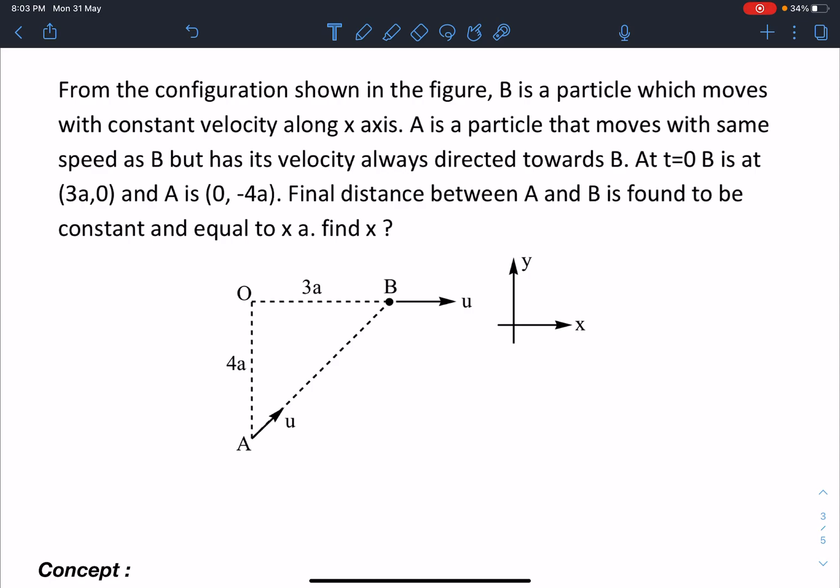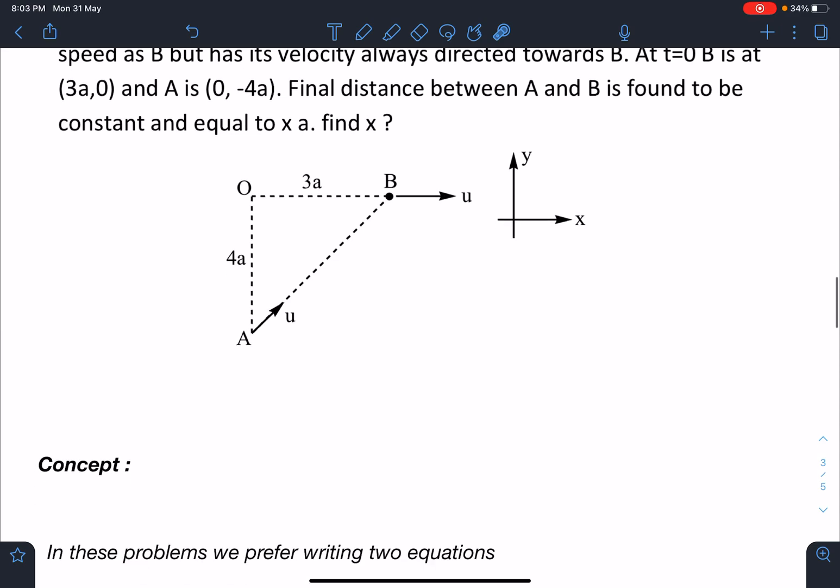At t equal to 0, B is at (3a, 0) and A is at (0, -4a). This point is taken as origin here. The final distance between A and B is found to be constant and equal to x*a. Find the value of x. It is an integer type problem here.